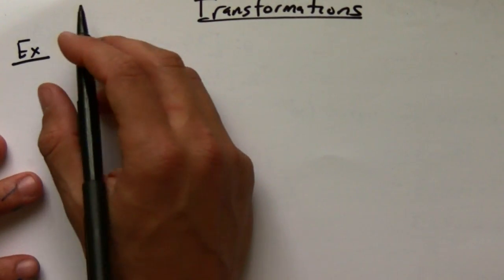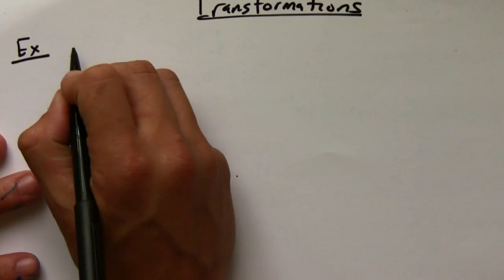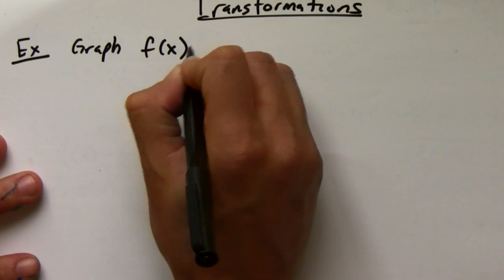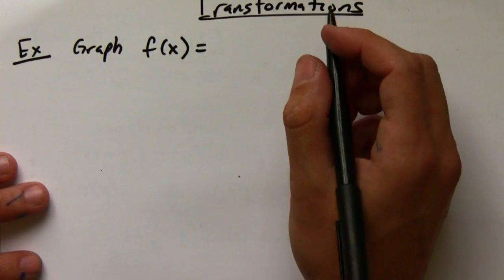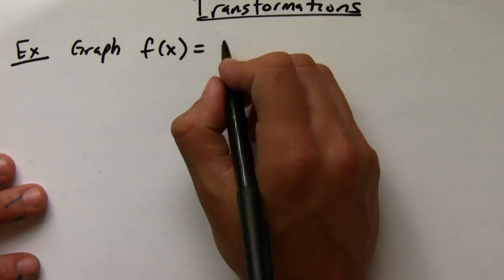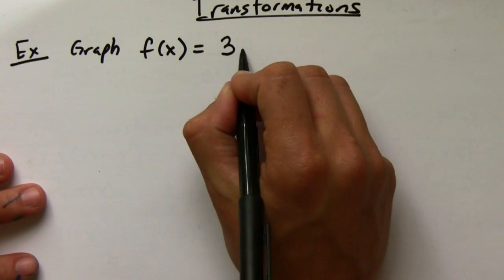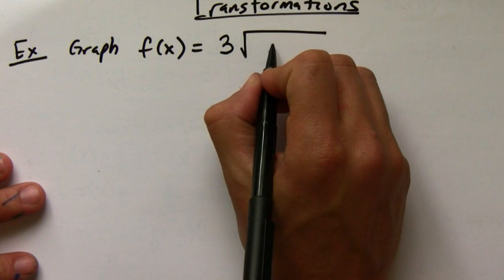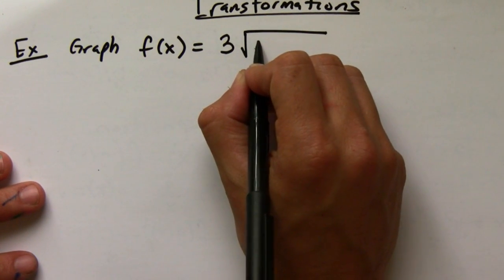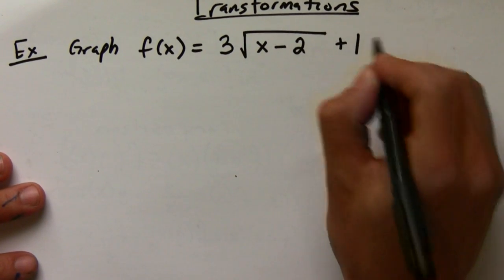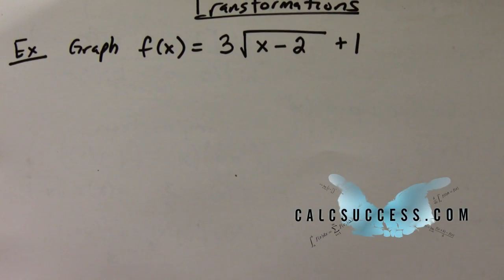Let's say you want to graph, for example, three times the square root of x minus two plus one. Now you have to remember what each one of these things does to your function when you're adding or subtracting.